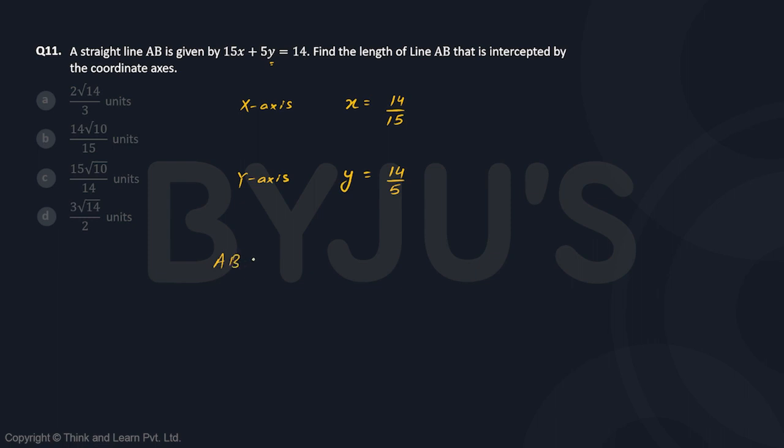Now the length of AB, the length of the intercept by the coordinate axes, will be equal to using the distance formula or the Pythagorean theorem. It will be equal to √[(14/15)² + (14/5)²].